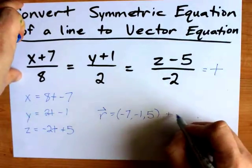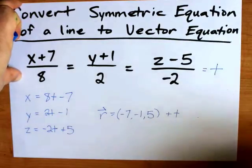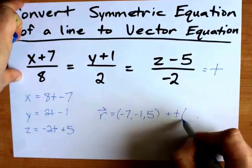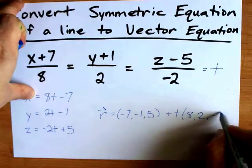Then I write plus t because I picked t from my parameter. You could have picked almost any letter you want. And use the coefficients on t as my direction vector. Now in this case I'm going to be lazy and use 8 comma 2 comma negative 2.